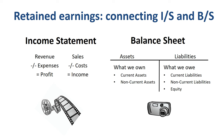You start a new income statement at the start of every new year. In order to close out the year and make the balance sheet balance at the end of the year, you add the profit that was made during the year to shareholders' equity. Retained earnings is a component of equity, as we will see in the upcoming examples.